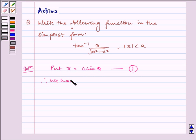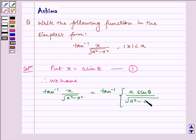Therefore, we have tan inverse of x by under root a squared minus x squared is equal to tan inverse of a sine theta by under root a squared minus a squared sine squared theta.